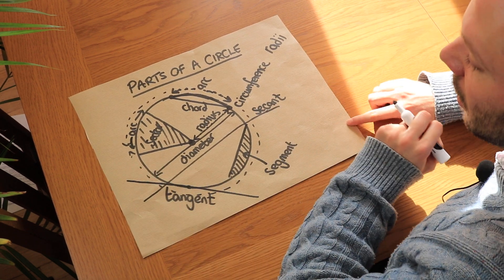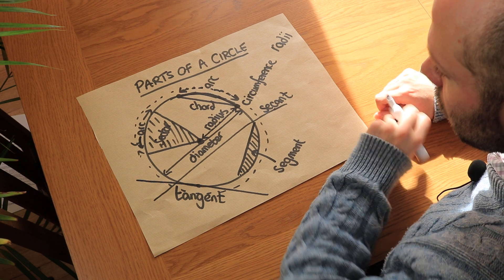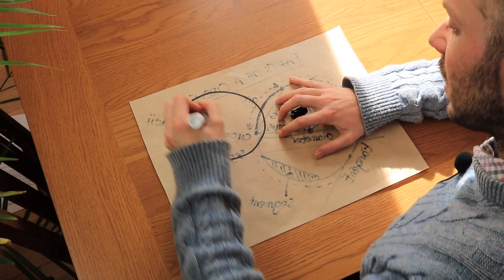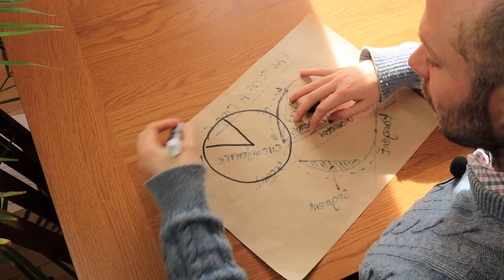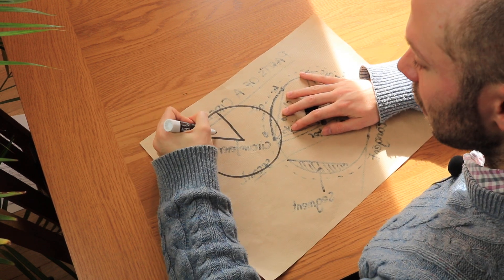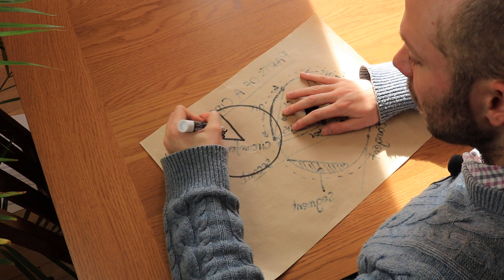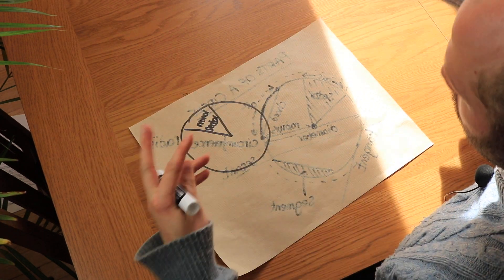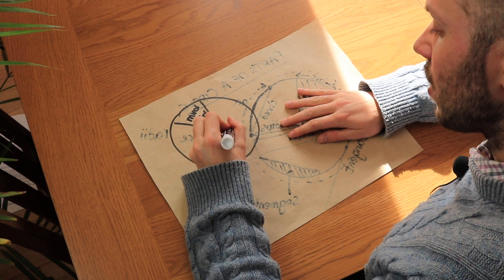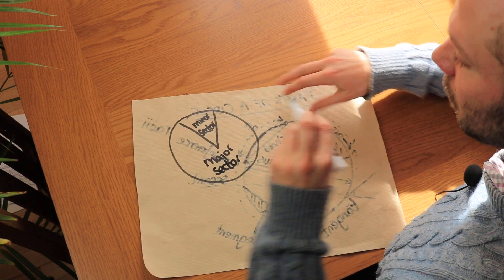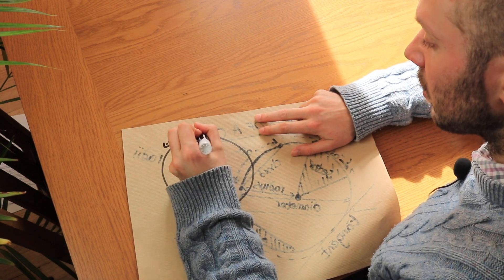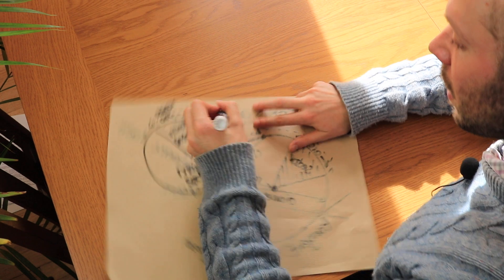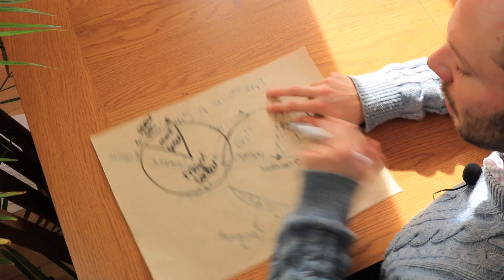One final point: the difference between a major sector and a minor sector. A minor sector is less than half the circle, while a major sector is more than half the circle — it's still a slice like a pie chart, just the larger portion. Similarly, we can have a major arc and a minor arc: a minor arc is less than half the circle, and a major arc is more than half the circle.